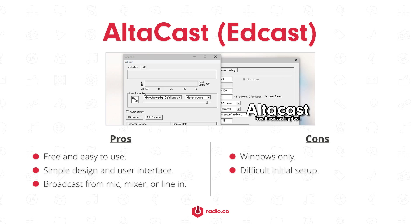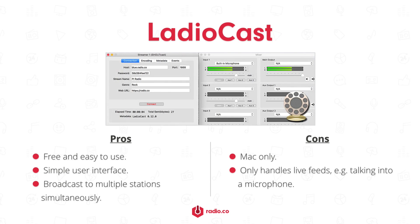AltaCast, formerly known as EdCast, is a fantastic piece of free Windows broadcasting software you should definitely check out. Although initially a bit fiddly to set up as you have to add your own encoders, it offers a minimal user interface — you only need to enter your service details, choose a recording source like a microphone, mixer, or line in, and then just click connect. There's also a free-to-use app designed for Mac OS X, equipped with four inputs and four outputs for greater flexibility, allowing you to connect and manage multiple devices like microphones, mixers, CD players, and decks, and transmit your stream to one or multiple stations simultaneously. Much like BUTT, AltaCast only handles live streams like talking into a microphone. A way around this is to use a multi-output device like SoundFlower to take all your audio and push it out online.